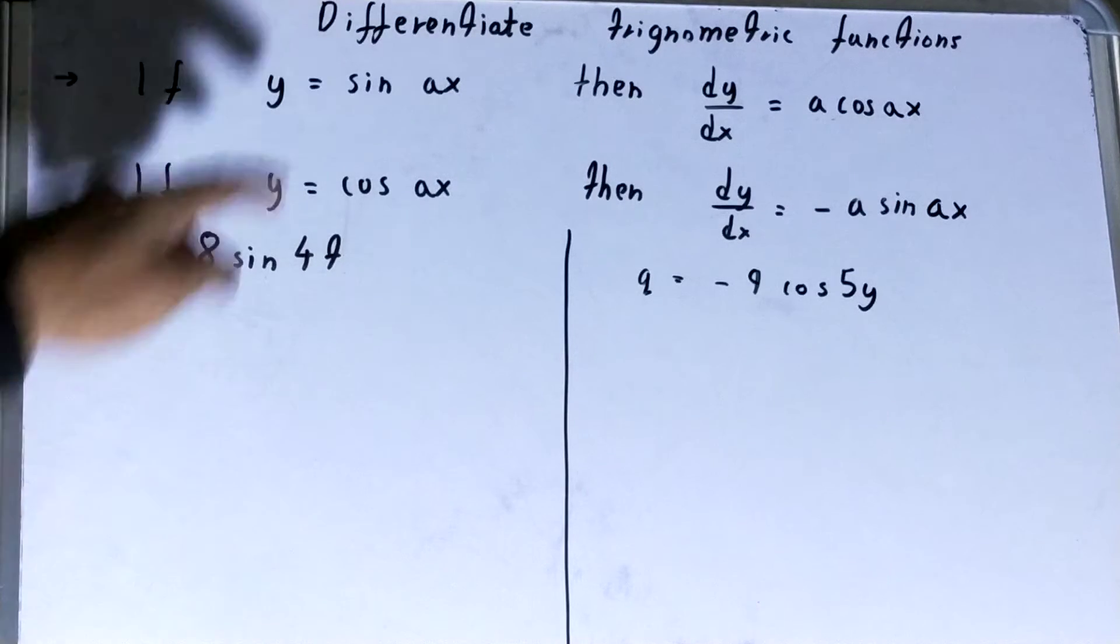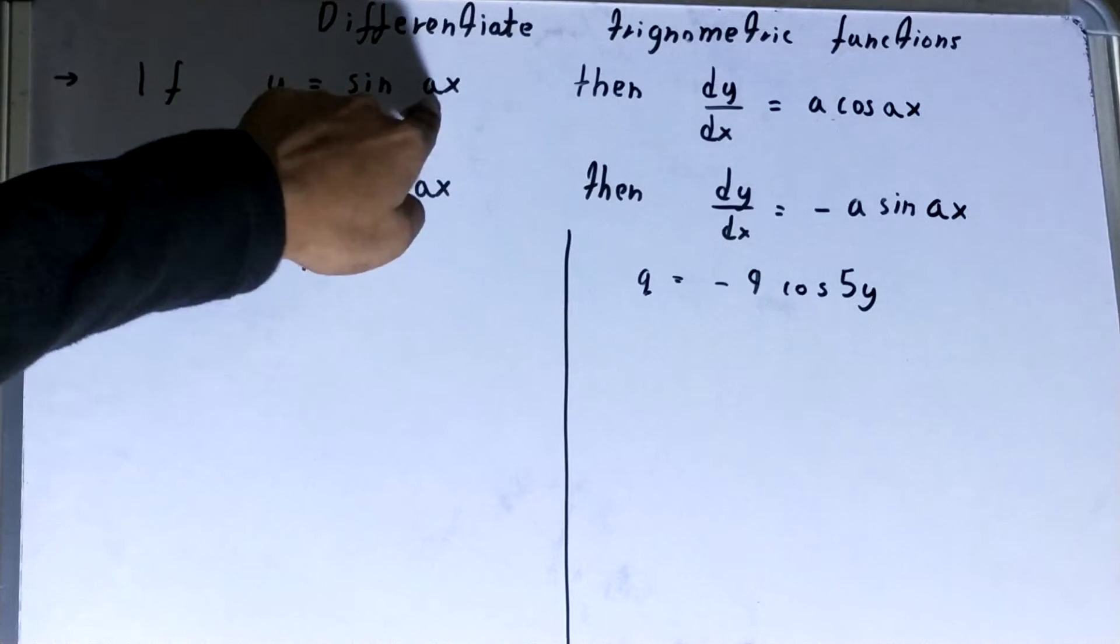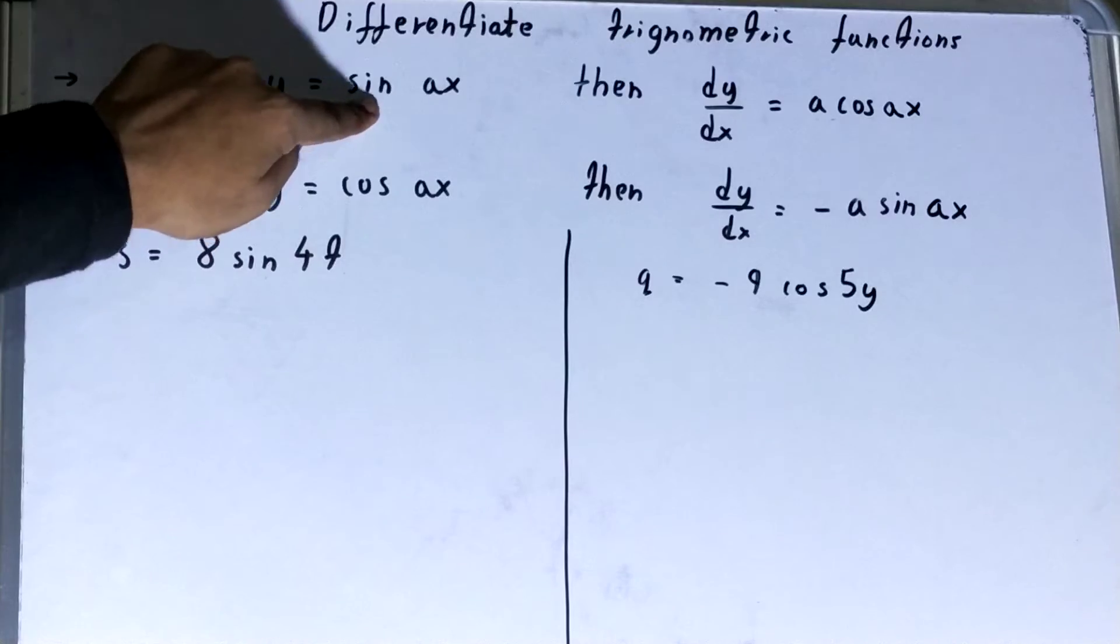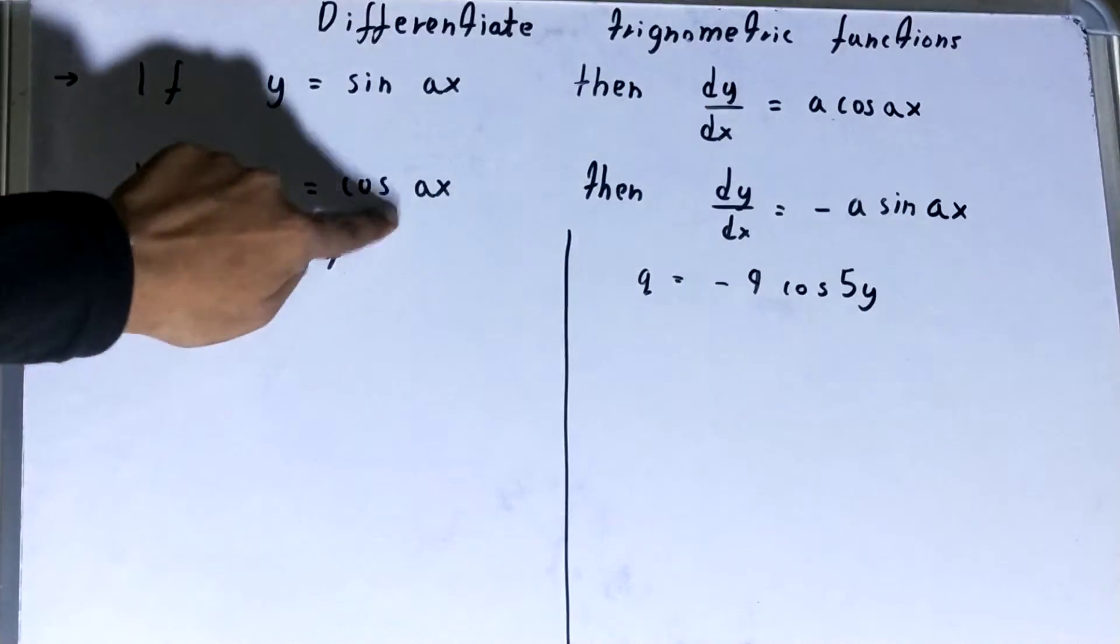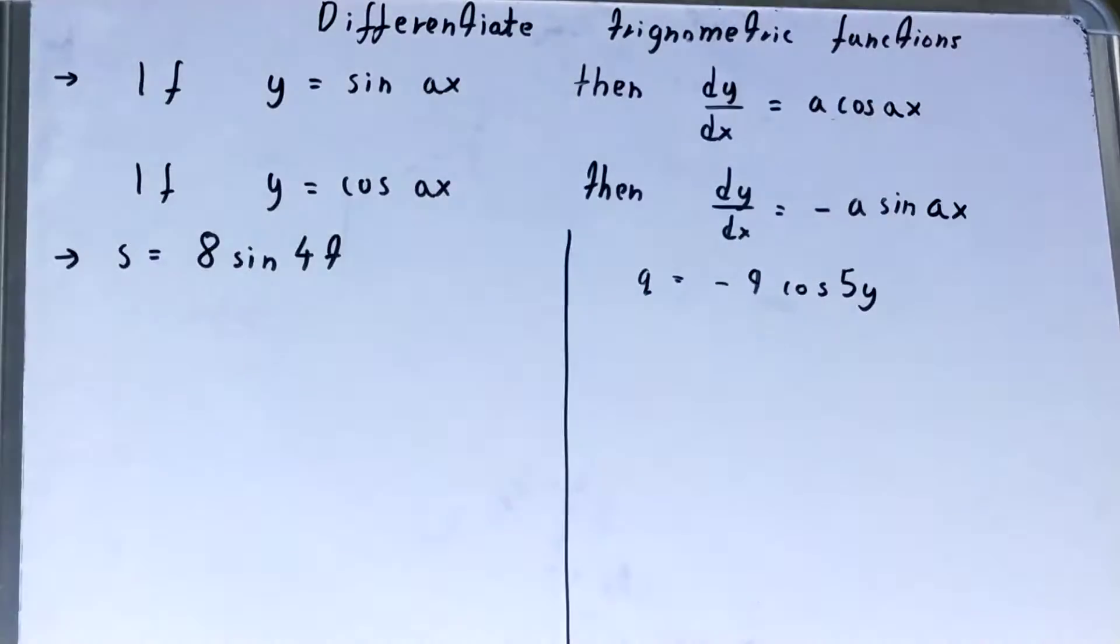If you have the differentiation of sine ax, where a is basically the coefficient of x, then it will be a cos ax. And if you have the differentiation of cos ax, then it will be minus a sine ax.